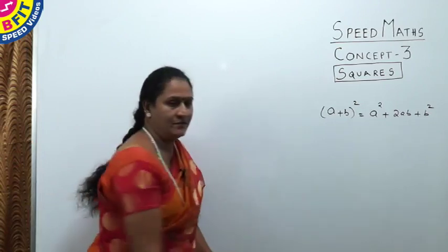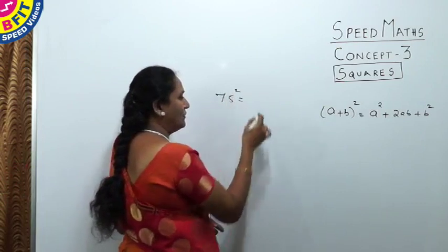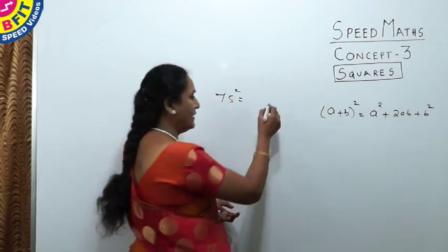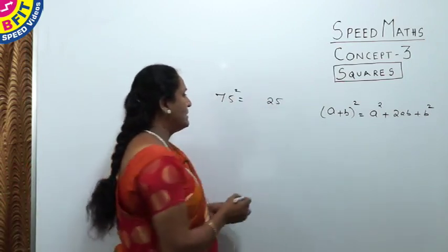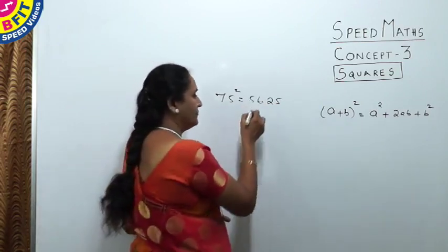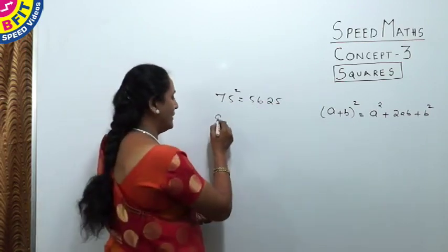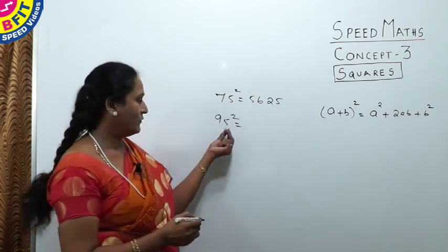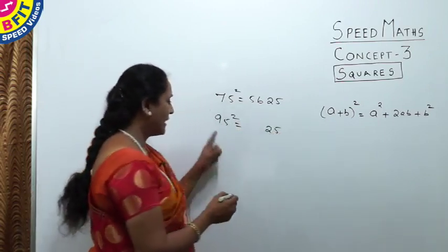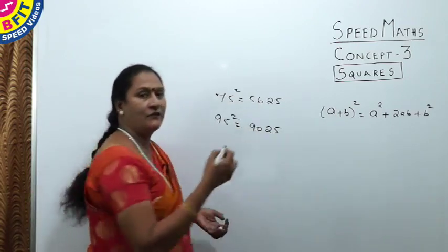The next number is 75. The last two digits will be 25. Then 7 is multiplied by its following number: 7 × 8 = 56. So the square of 75 is 5625. For 95: the last two digits are 25, and 9 × 10 = 90, so the square of 95 is 9025.